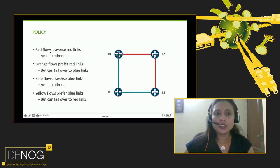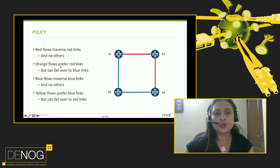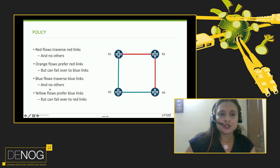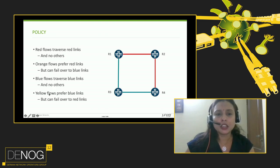The requirement here is: red flows should traverse red links and no others. In the example topology, R1-to-R2 and R2-to-R4 are red links; R1-to-R3 and R3-to-R4 are blue links. There is a second flow, the orange flow, whose rule is it has to prefer red links, and if there is a failure it can failover to blue links. The blue flow should traverse only blue links, and if there's a failure, traffic would drop — it would never go on red links. The yellow flow prefers blue links, but if there is a failure, it can failover to the red links.